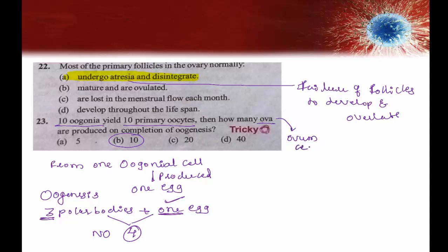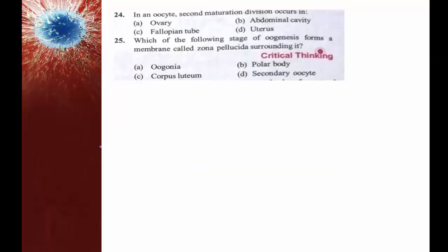Ovum is the singular term for egg. So from 10 oogonial cells, only 10 eggs are produced — unlike spermatogenesis where one primary spermatocyte gives four sperms. The right answer is option B.